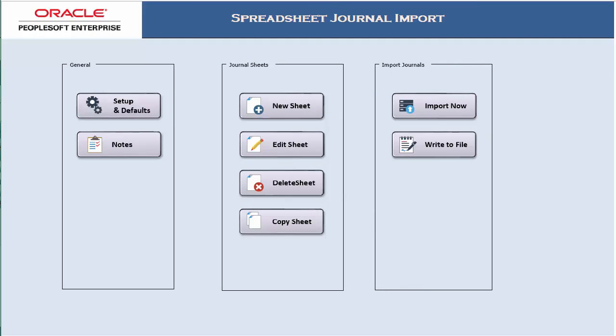The Expanded General Ledger Spreadsheet Upload feature includes an updated look with two new sub-features: the ability to have the system run the Edit Journals process after the Import process, and the ability to have the system send a message to Approvers after the Edit process. Both of these sub-features are optional, but you must run the Edit Journals process if you want to send a message to Approvers. This completes our demonstration of the Expanded General Ledger Spreadsheet Upload feature.